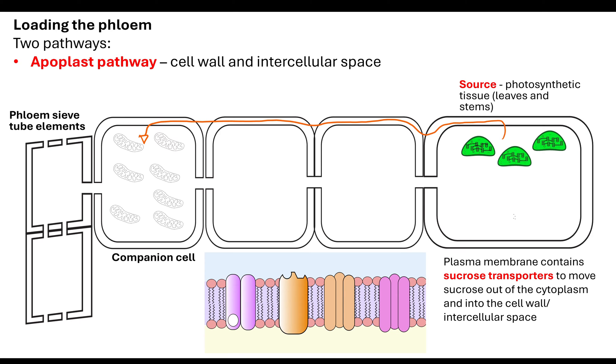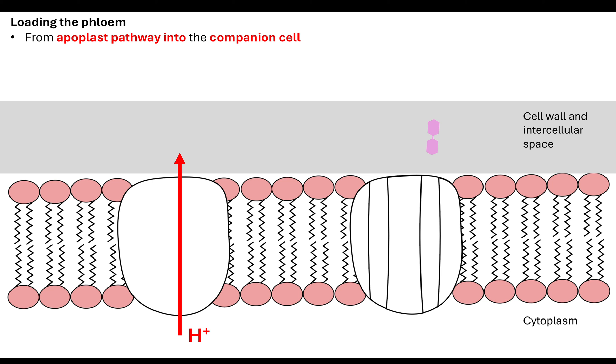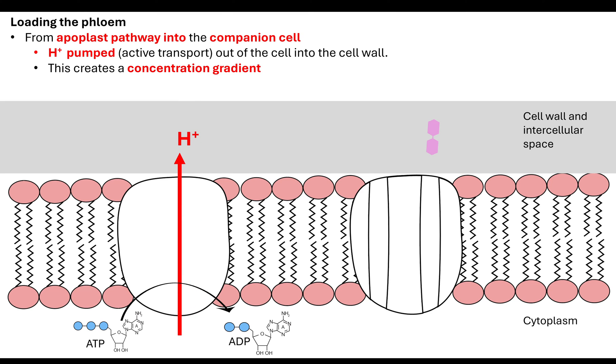At the source, the plasma membrane contains transporters for sucrose. These are proteins that are very specific to allow sucrose to cross the membrane. That allows the sucrose to move out of the cytoplasm into the cell wall and intercellular spaces, making its way down to the companion cell.